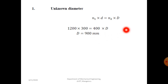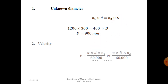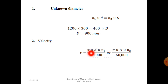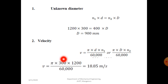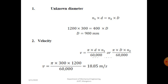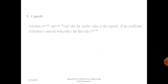Step 2: Calculate velocity. Use v = π*d*N1 / 60000 or π*D*N2 / 60000 — both give the same answer. Using the smaller pulley: v = π × 300 × 1200 / 60000 = 18.85 m/s. That is the belt velocity.